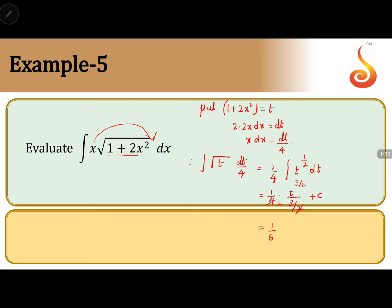1 by 6 into t to the power 3 by 2 plus c. As I told, always final answer should be in terms of x. Therefore what is t? t is nothing but 1 plus 2x square whole to the power 3 by 2 plus c is the final answer.